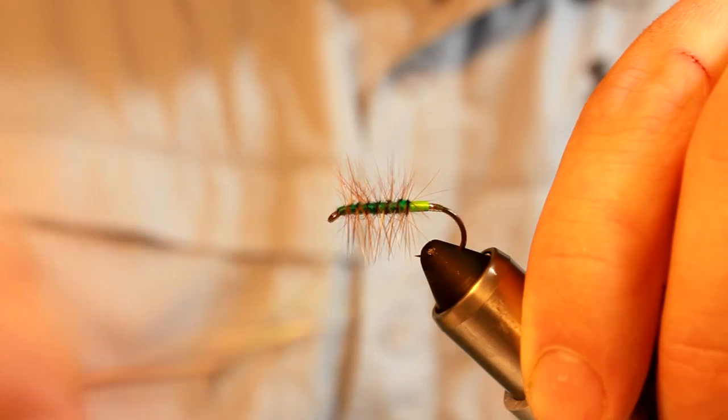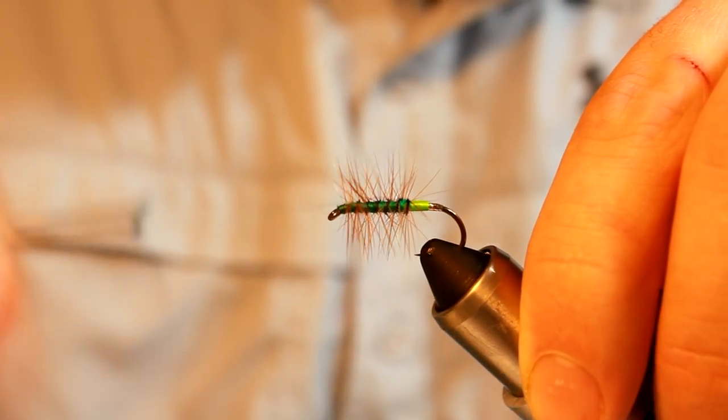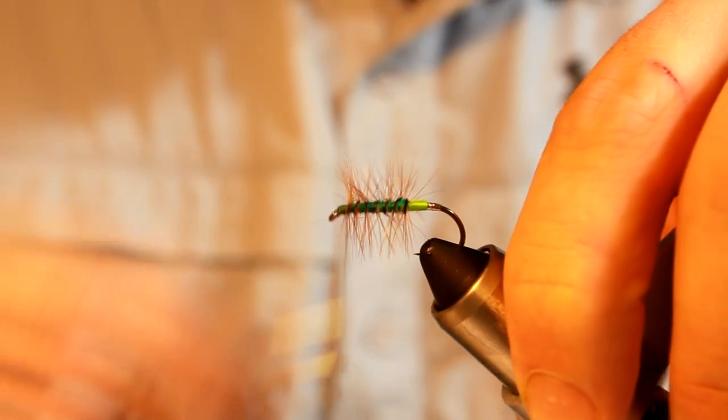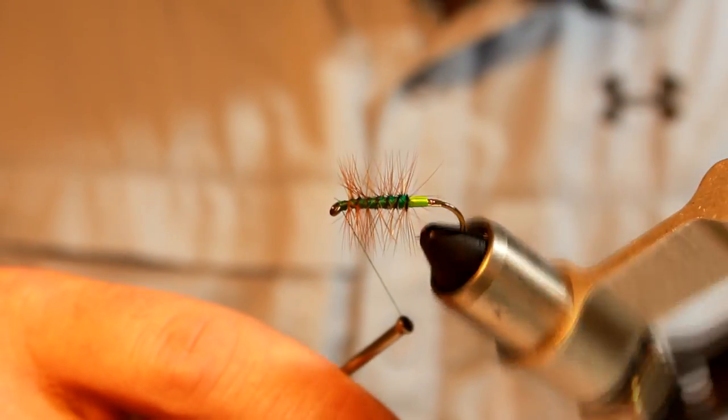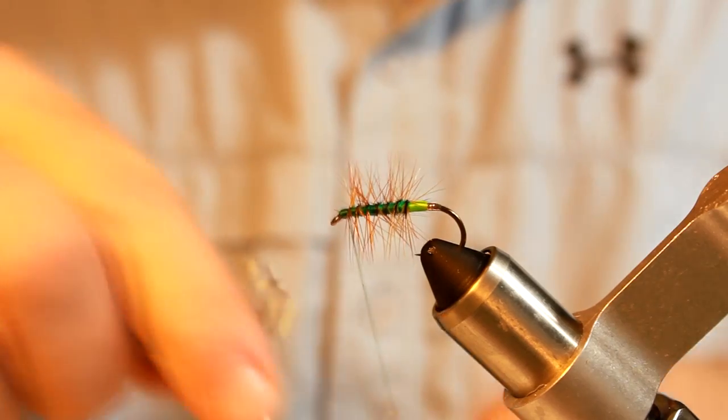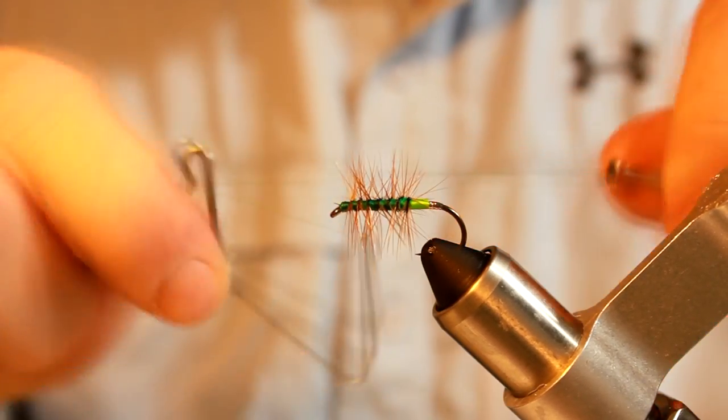I like to tie this one with green thread. As you can see, I just passed the thread down and back up through the hackle to give it some added strength and durability. We're using the green thread that matches the body, so it doesn't really change the look of the fly.